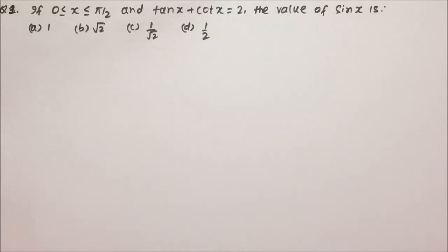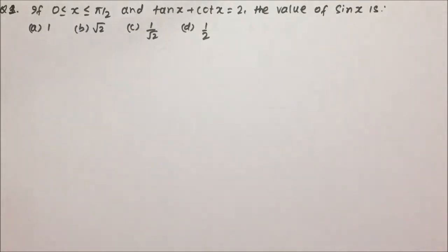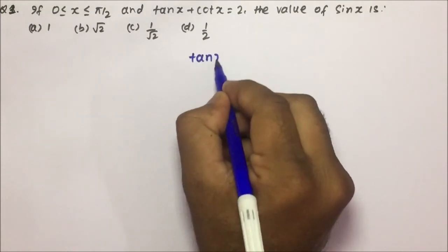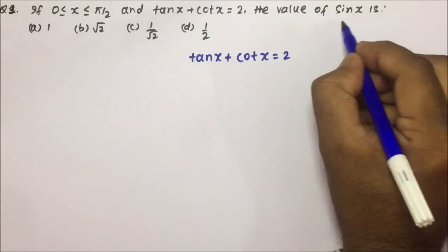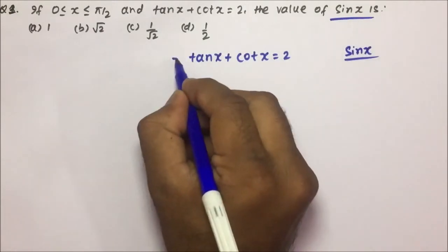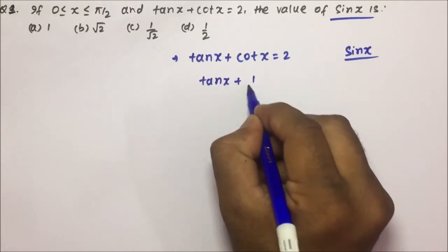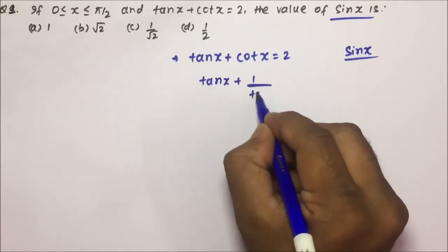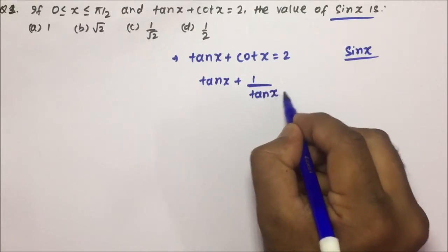Now, the question is: if x is in between 0 to π/2, and tan x plus cot x equals 2, then you have to find out the value of sin x. So, tan x plus cot x — I can write cot x as 1 divided by tan x — so tan x plus 1 divided by tan x equals 2.